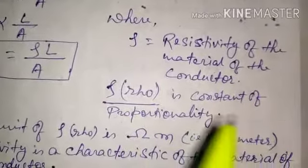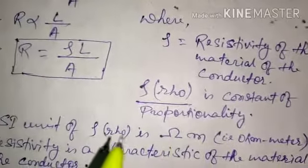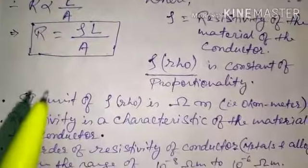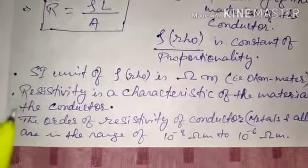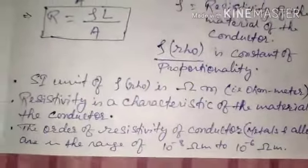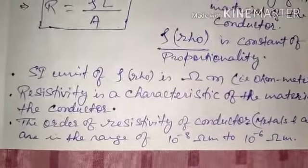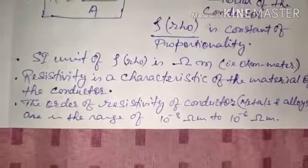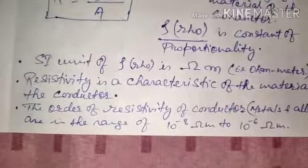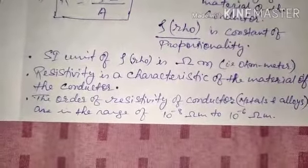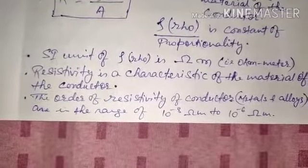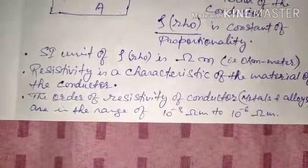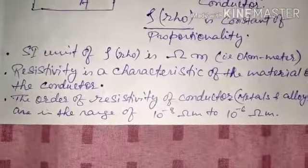Now let us discuss some more points regarding resistivity. The SI unit of ρ is ohm-meter. Resistivity is a characteristic of the material of the conductor. The order of resistivity for conductors — metals and alloys — is in the range of 10⁻⁸ ohm-meter to 10⁻⁶ ohm-meter, which means the resistivity of metals and alloys is very low.